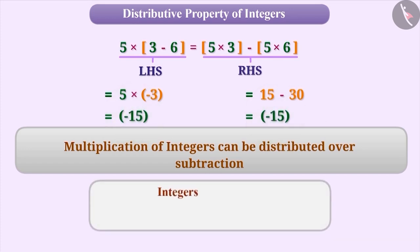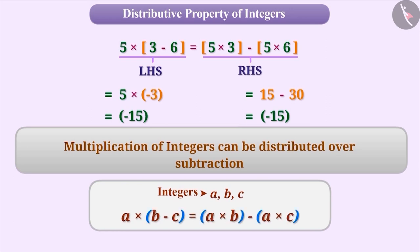Hence, for any three integers A, B and C: A × (B − C) = A × B − A × C. The distributive property tells us that we can either subtract the numbers inside the bracket and then multiply the result with the number outside, or multiply the number outside the bracket with each number inside and then subtract the results.